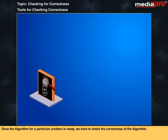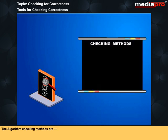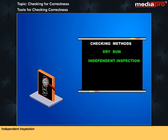Once the algorithm for a particular program is ready, we have to check the correctness of the algorithm. The algorithm checking methods are: Dry Run, Independent inspection, and structured walkthrough.